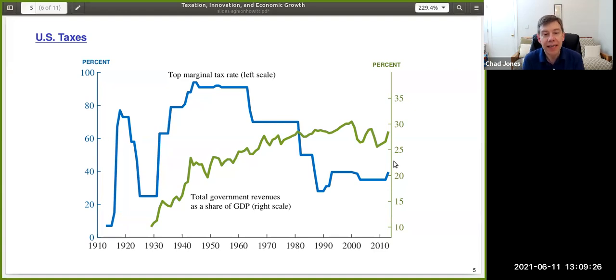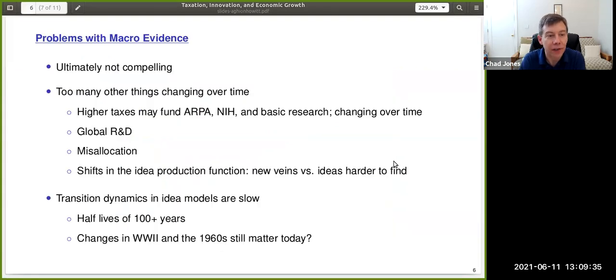Can we use this evidence to learn something about the effect of taxes on growth? After thinking about it for a long time, I think the conclusion is that it's really hard. It's very hard to use macro evidence. It's ultimately not that compelling. And the reason is that there are just so many other things that are changing over time. Think about the 40s and 50s and 60s, the higher tax revenues that were coming from those high marginal rates, they were used to fund basic research. They were used to fund ARPA and eventually the NIH and other basic research programs.